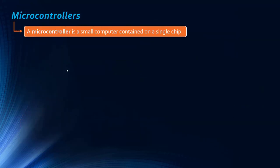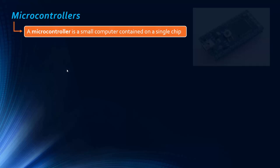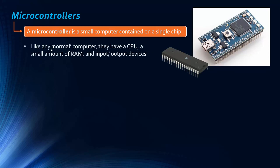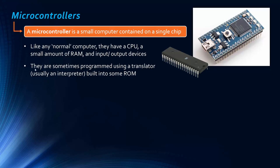The final thing to talk about is microcontrollers. A microcontroller is a small computer contained on a single chip. Like any normal computer, they have a CPU to execute instructions, a small amount of RAM, and input-output devices or peripherals — there would probably be sensors too. They'll have some ROM — read-only memory — and might have a translator stored in that ROM, usually an interpreter, because it's quite flexible for this purpose. They can be programmed using that translator to control the device.